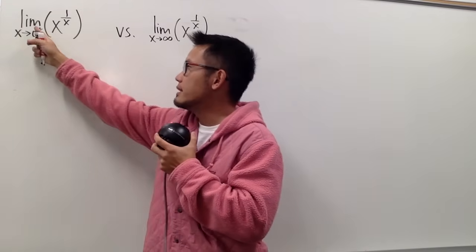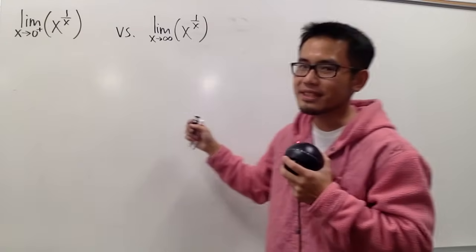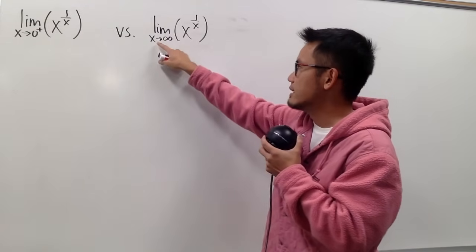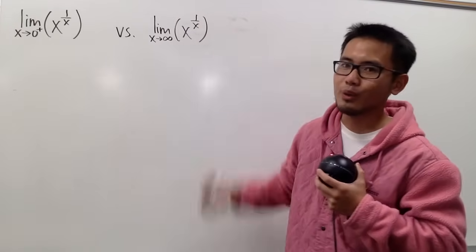Two limit questions on the spot. The first one, the limit as x goes to 0+, x to the 1 over x power, and for the second one, we have the limit as x goes to infinity with the same function, x to the 1 over x power as well.